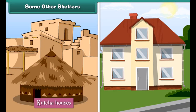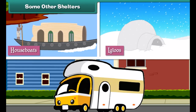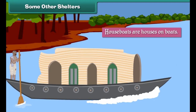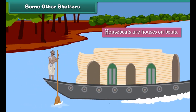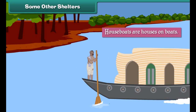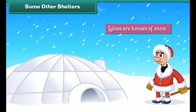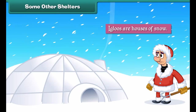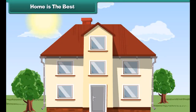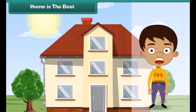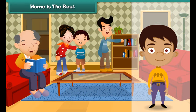Apart from kacha and pakka houses, there are some other forms of shelter. Houseboats are houses on boats — they float on water and are found in Kerala, Kashmir, etc. Igloos are houses made of snow, built by Eskimos and found in Greenland. Caravans are mobile houses with wheels that can move from place to place, used by gypsies who wander from place to place.